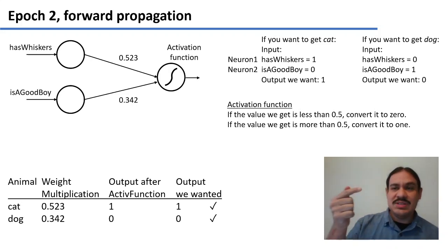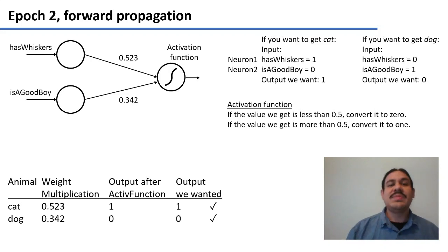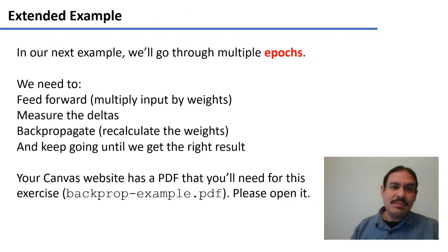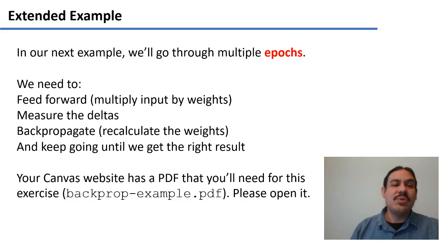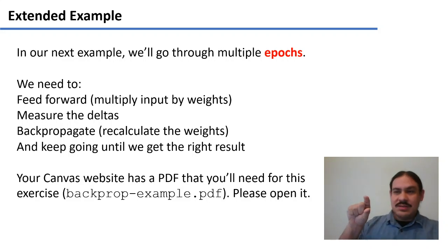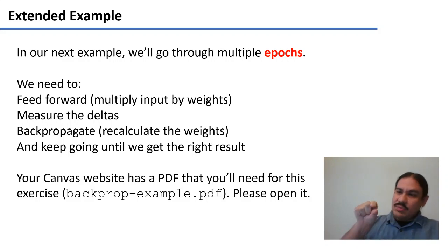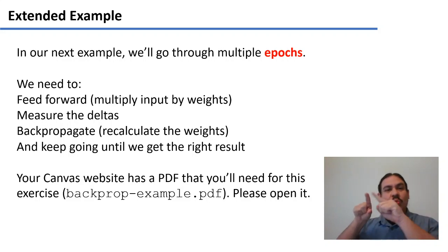It also converts the input zero-one for dog to the output zero. But we have to do this in two epochs — first we made a mistake, then we used backpropagation for the network to learn the correct weights. In this example, we're going to go through multiple epochs of training: feed the input forward with forward propagation, measure the deltas or error, back-propagate that error to recalculate our weights, and repeat until we get weights that work.